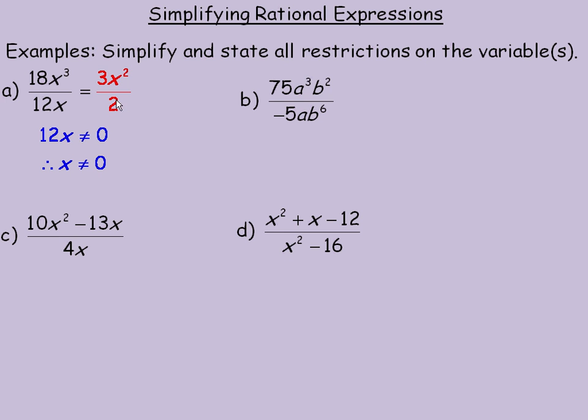So the restriction for this 18x cubed over 12x or 3x squared over 2 is just x cannot equal 0. Even though the x is no longer in the denominator, the fact that it was at one point means that we still look at what values would make 12x equal to 0 and that is 0. So the restriction is x is not allowed to equal 0.